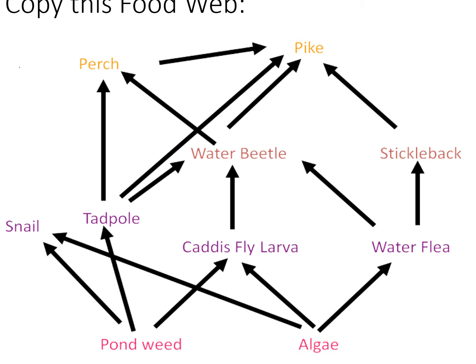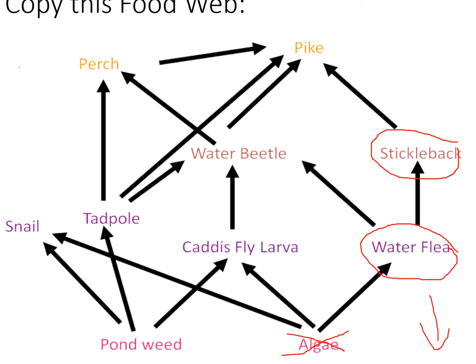Question two was: what would happen to stickleback numbers if algae went extinct? Sticklebacks don't eat algae, but what they do eat is water fleas. As we've already discussed, if algae went extinct, water fleas would decrease, so that means sticklebacks would also decrease because water fleas would no longer be available as their food.